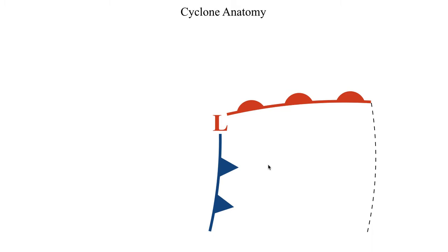This warm, moist air forms what's referred to as the warm sector. A lot of times the wind speed will weaken considerably as you get farther away from the cyclone, so you'll have relatively warm, moist air here and relatively cooler air away from the cyclone. This forms what's referred to as a prefrontal boundary, indicated by a dashed line. You can also get a thermal contrast or a frontal boundary developing ahead of the cyclone, due to the fact that you have relatively warm, moist air here and relatively cold air over there.